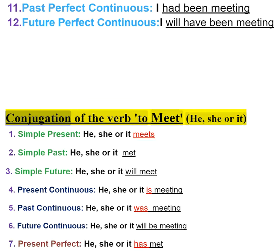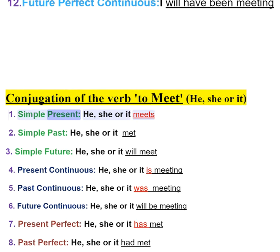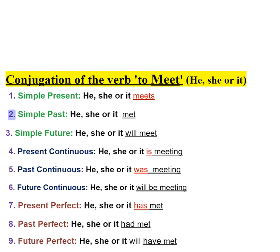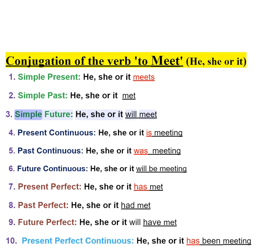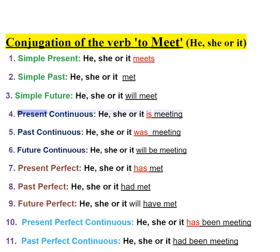Conjugation of the verb to meet — he, she, or it. 1. Simple present — he, she, or it meets. 2. Simple past — he, she, or it met. 3. Simple future — he, she, or it will meet. 4. Present continuous — he, she, or it is meeting.